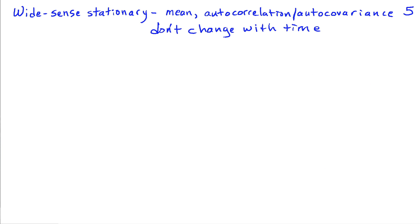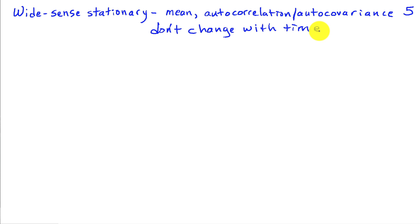We'll conclude with a couple more terms. Wide-sense stationary refers to a signal where only the mean and the autocorrelation or autocovariance are invariant with time. Higher-order moments or the probability density function could still be changing with time, but if the first two don't change, we say it's wide-sense stationary. This is the most relevant definition for signal processing, because most of the time we're only working with the first two moments anyway.